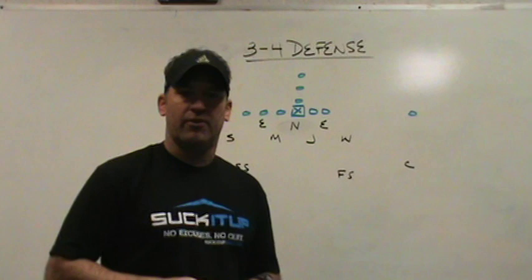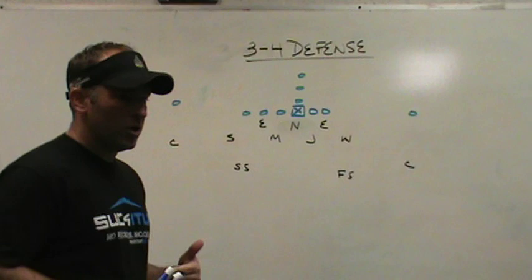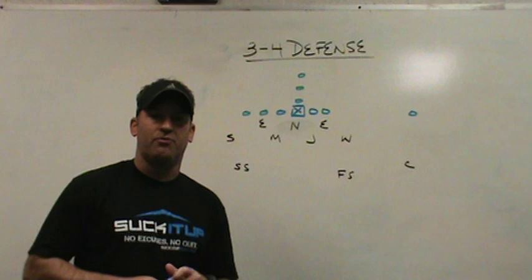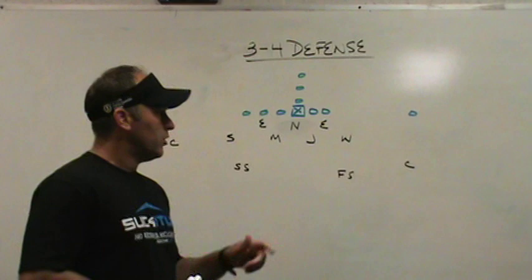The first thing we need to talk about is understanding what makes a defensive structure. When you're identifying defensive structures, what you want to look at is the personnel that the defense chooses to use on the football field. Don't look at the fronts that defense employs and try to understand what type of defensive football team they are. Fronts are universal — fronts can be run from any defensive concept. The thing that identifies a defensive structure is the personnel they put on the field.